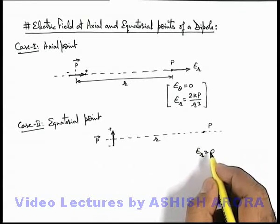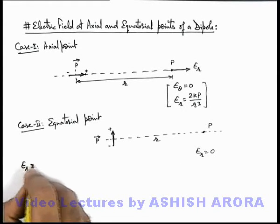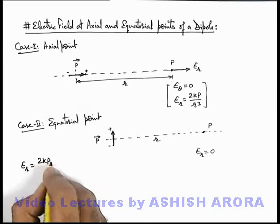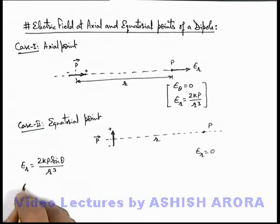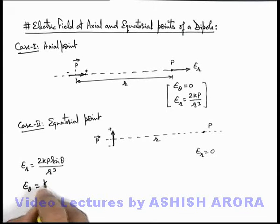Same you can also calculate by using the expression of radial field. Here I can write down again the expression: radial field is given by 2kp sin(theta) by r³, and transverse electric field is kp cos(theta) by r³.